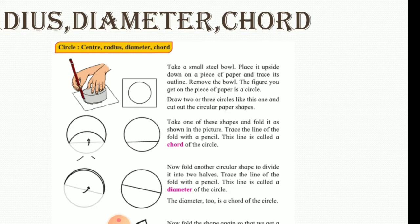Now take another cutout of the circle and fold it so that it overlaps the other side, and thus it divides the circle into two equal halves.